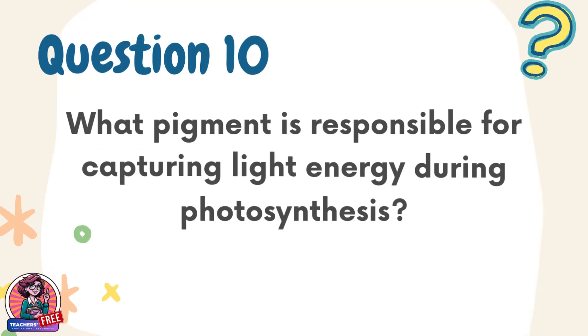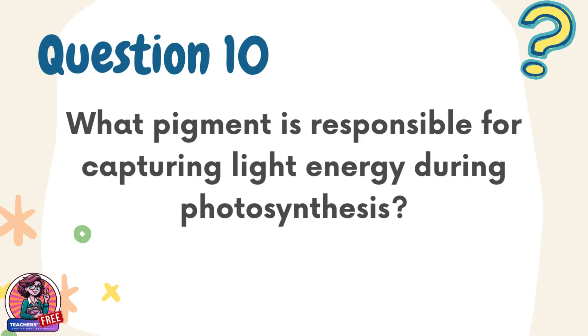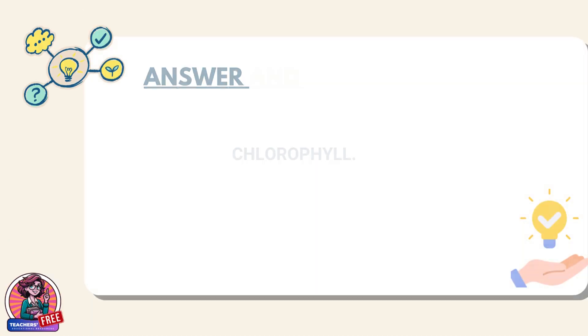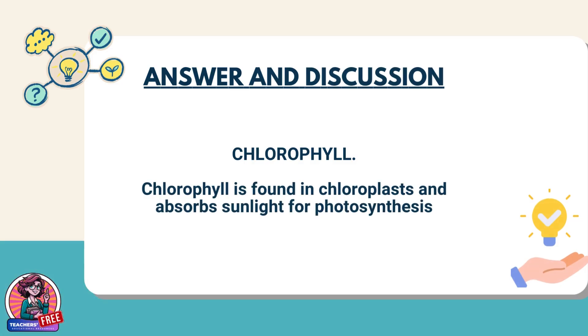Question 10. What pigment is responsible for capturing light energy during photosynthesis? Answer: Chlorophyll. Chlorophyll is found in chloroplasts and absorbs sunlight for photosynthesis.